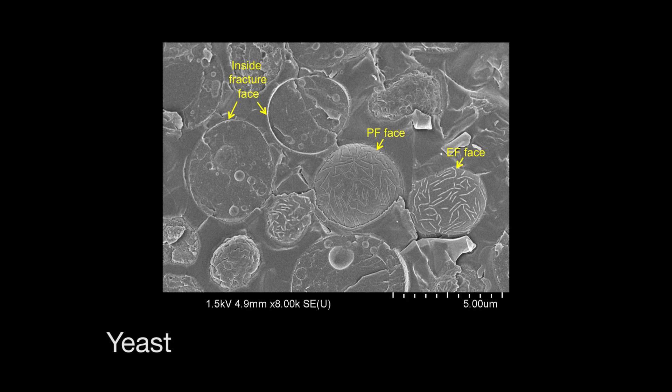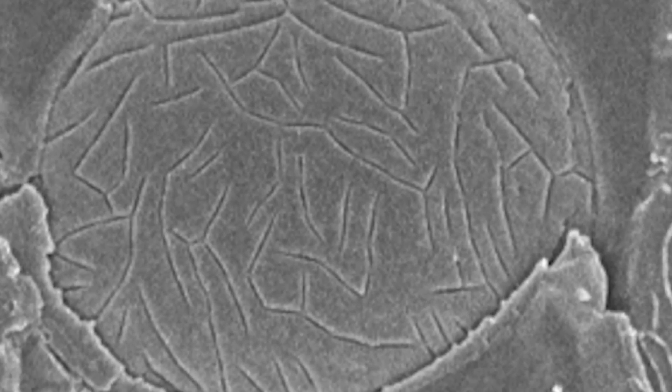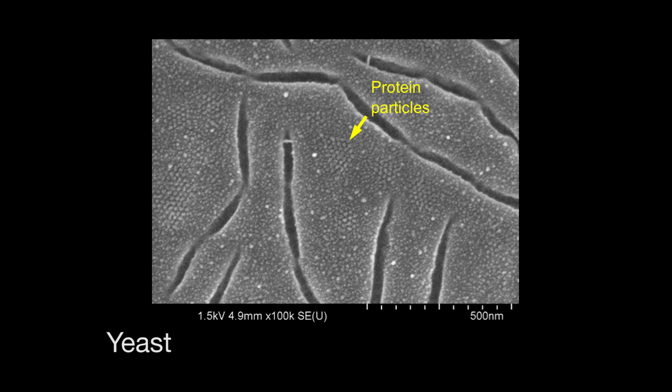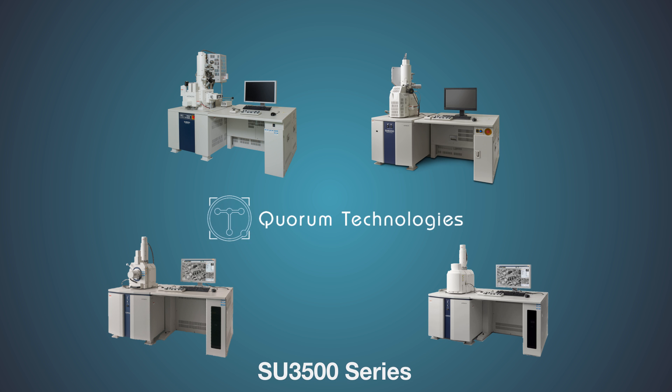For superior data results, the SU-8200 Cold Field Emission Scanning Electron Microscope, integrated with the Quorum system, is the only solution for ultra-low-voltage cryogenic biological observation of very fine structures. Hitachi's product line of variable pressure scanning electron microscopes and field emission SEMs.